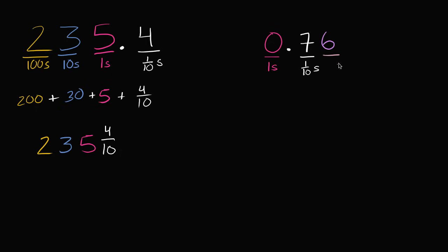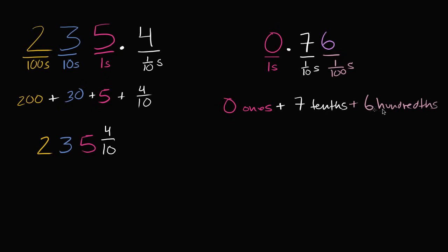So this number right over here we can rewrite as zero ones plus seven tenths plus six hundredths — not hundreds, hundredths. Or we could write this as zero plus seven tenths plus six hundredths. So seven tenths plus six hundredths is exactly what this is. You could say this is zero ones, seven tenths, and six hundredths.